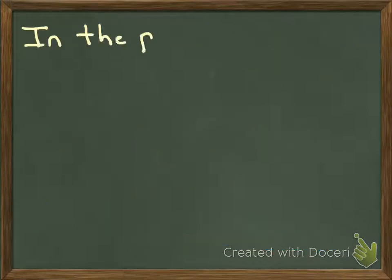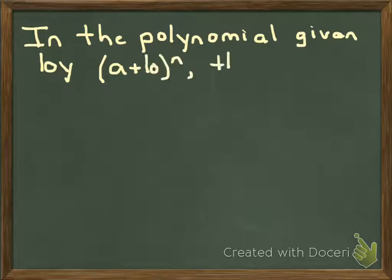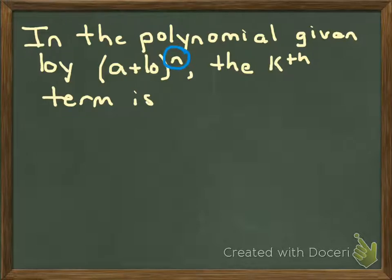So here's the idea. If we expand and find a polynomial given by a plus b to the nth power, and we want the kth term, we have a binomial being raised to a power. We end up with a long polynomial. We just want the kth term, a certain position in the list. We do have a formula for it.